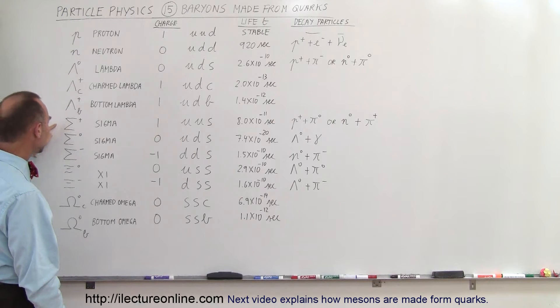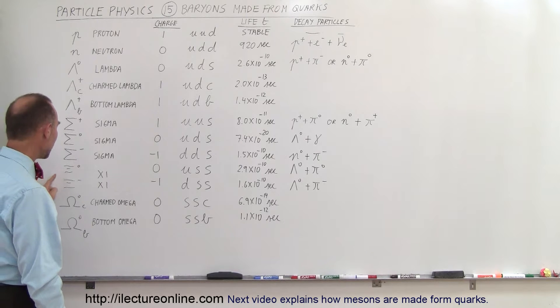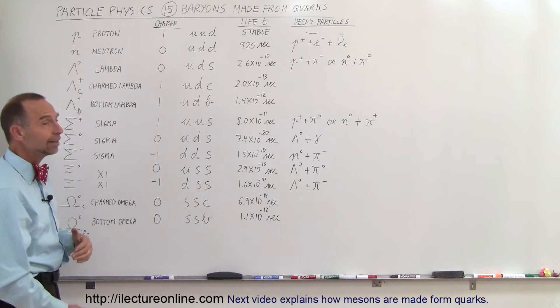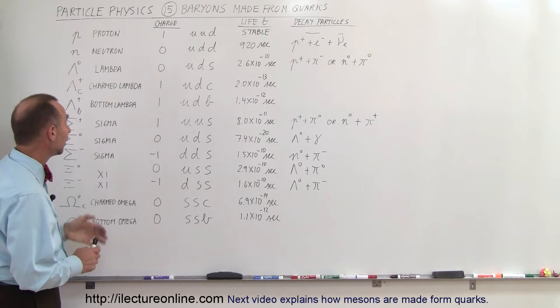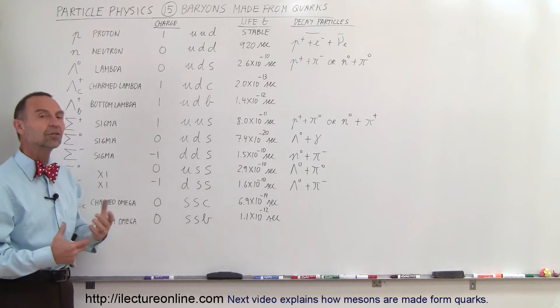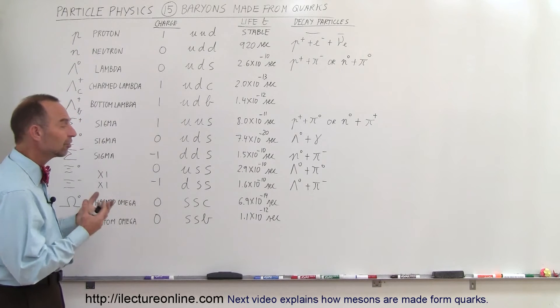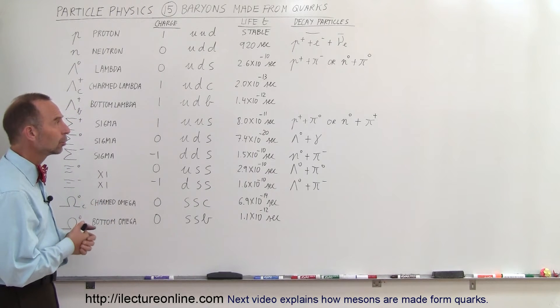We have the positive sigma, the neutral sigma and the negative sigma. We have the neutral psi and the negative psi, and we have the charmed omega and the bottom omega. They're just kind of representative of some of the more common particles. Although I would say the charmed and the bottom lambda and the charmed and bottom omega are not as common, but yet part of the set that tends to get created when we do research work in our nuclear accelerators.